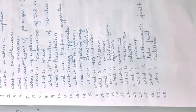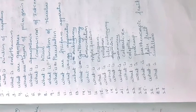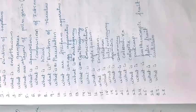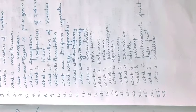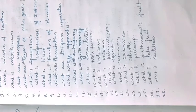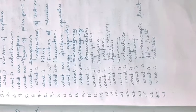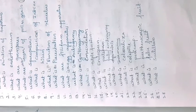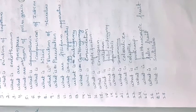What is geitonogamy? Geitonogamy is a type of pollination where the transfer of pollen grains occurs from the anther to the stigma of another flower of the same plant. Two different flowers of the same plant are involved in geitonogamy.